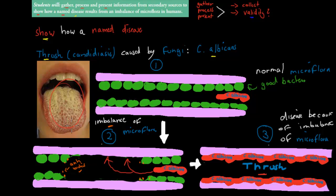Hopefully this was a useful summary of the five dot points from the fourth context point, giving you an insight into what you need to know.